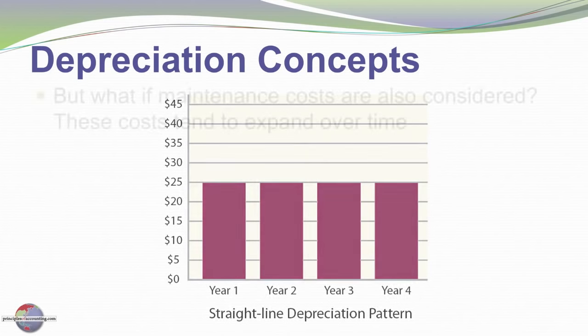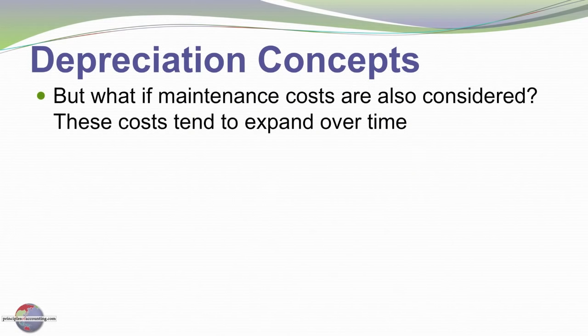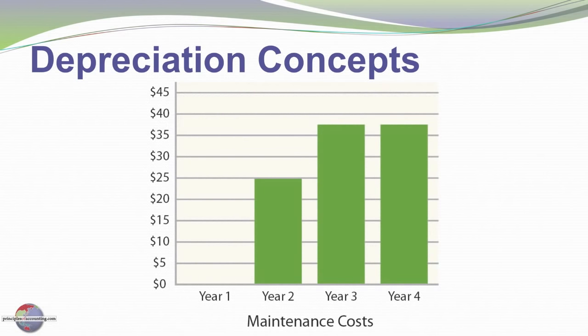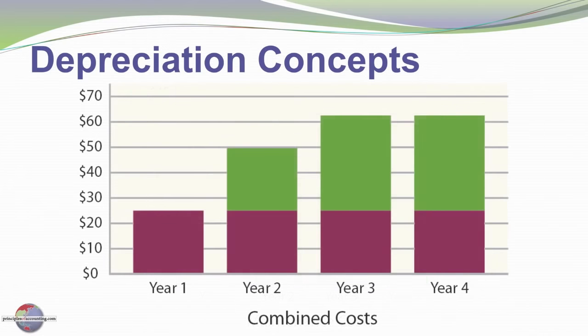However, if we also consider maintenance costs — think about an automobile: as it gets older you expect maintenance costs to rise, things start to break and wear out. So over time you might not have any maintenance costs in the first year, and then it may go up in subsequent years. When you put depreciation and maintenance costs together, you might actually see that our total reported cost — depreciation plus maintenance — is going up even though usage of the asset is uniform.